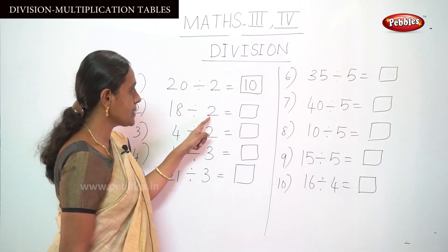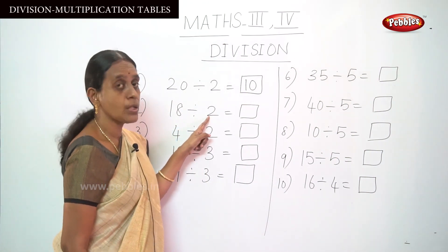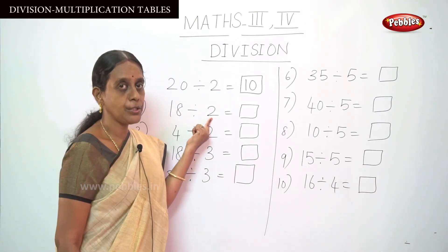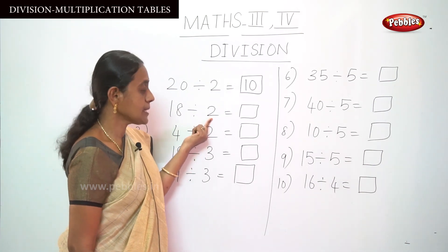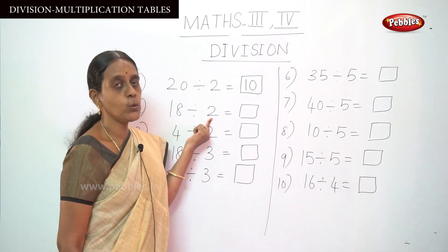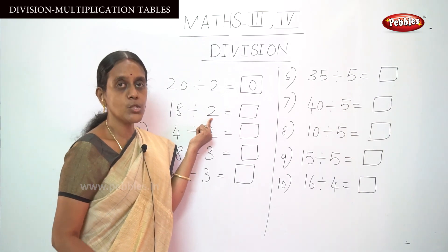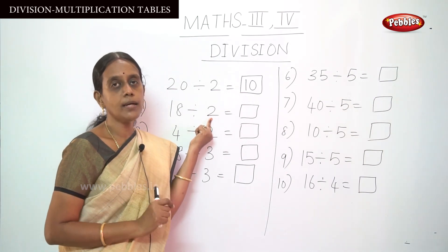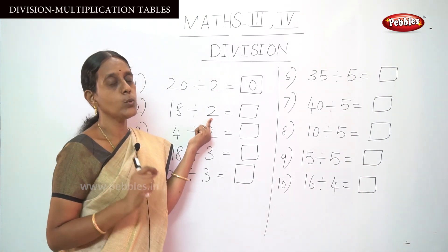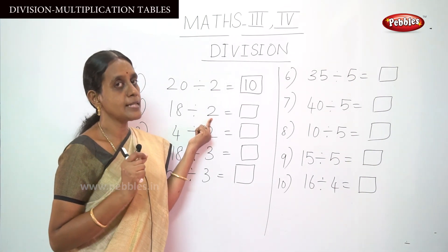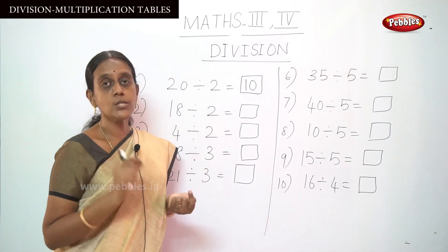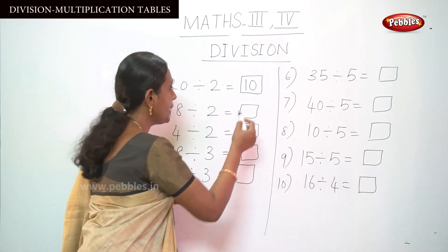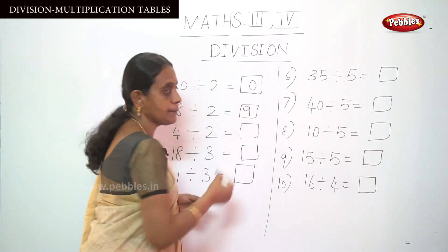Let me move on to the next sum: 18 divided by 2. You are going to say the 2 table. Starting from 5: 5 2's are 10, 6 2's are 12, 7 2's are 14, 8 2's are 16, and 9 2's are 18. So put 9 here as the answer.